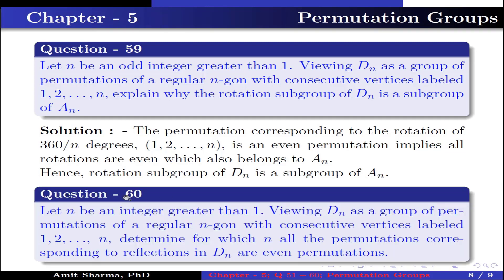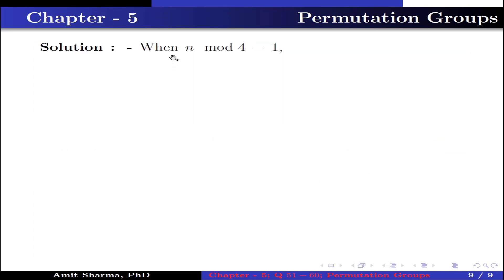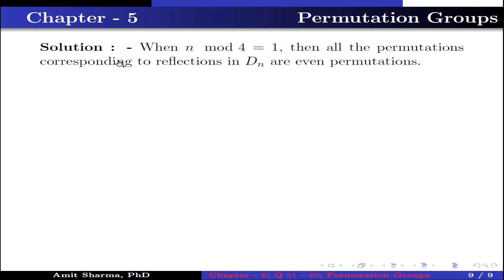Question number 60. Let n be an integer greater than 1; viewing Dn as a group of permutations of a regular n-gon with consecutive vertices labeled 1 to n, determine for which n all the permutations corresponding to reflections in Dn are even permutations. When n mod 4 equals 1, all permutations corresponding to reflections in Dn are even permutations.